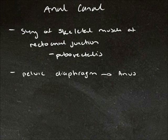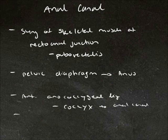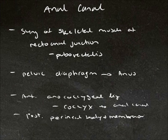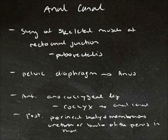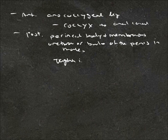The anal canal is anterior to the anococcygeal ligament, which as the name suggests connects the coccyx to the anal canal. It is posterior to the perineal body and membranous urethra or bulb of the penis in males, or the vagina in females.